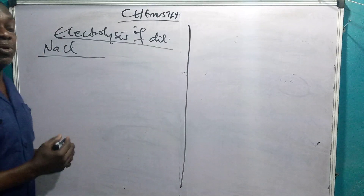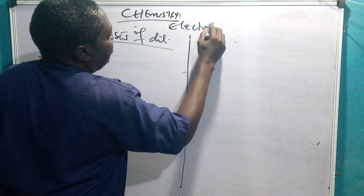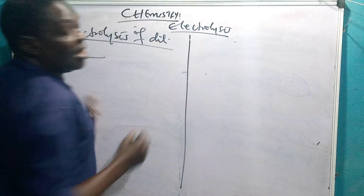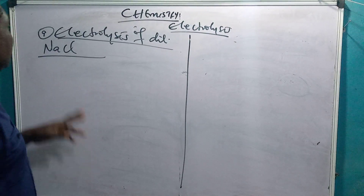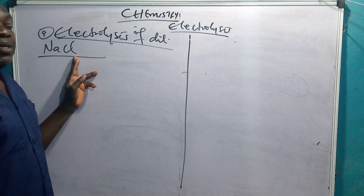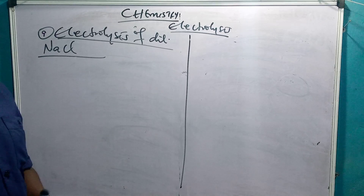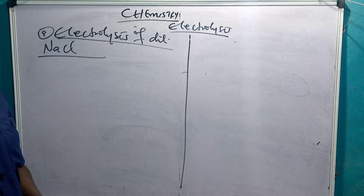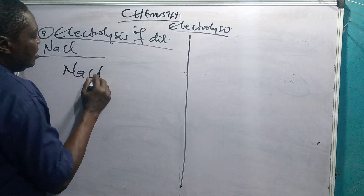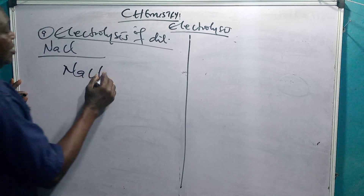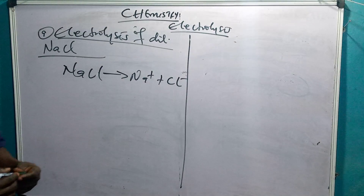So let's go to the electrolysis of dilute sodium chloride. Remember the topic is just on electrolysis — examples of electrolysis, that's what we are still discussing. Electrolysis of dilute sodium chloride: dilute sodium chloride means you have taken sodium chloride and dissolved it in water. Sodium chloride is the common salt used in the kitchen. So you have NaCl, which will undergo ionization based on the ionic theory to give Na⁺ and Cl⁻.